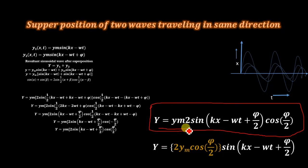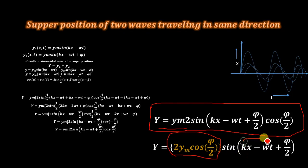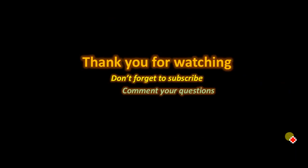Rearranging, we have y = 2ym·cos(π/2)·sin(kx − ωt). Here, 2ym·cos(π/2) is the amplitude of the resultant wave, and (kx − ωt) is the phase angle. That's it — thank you for watching, and don't forget to subscribe to Easy Edu for more videos.